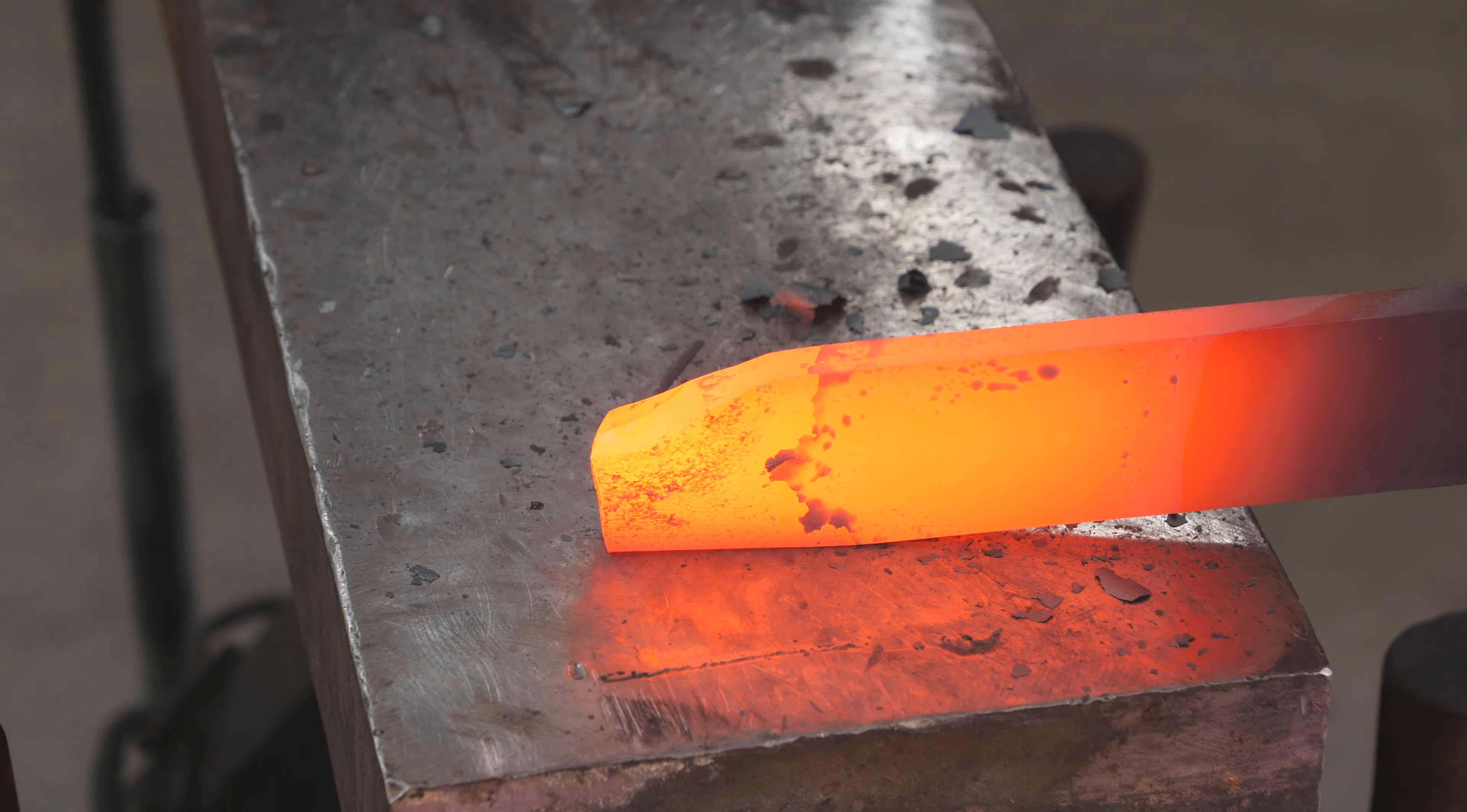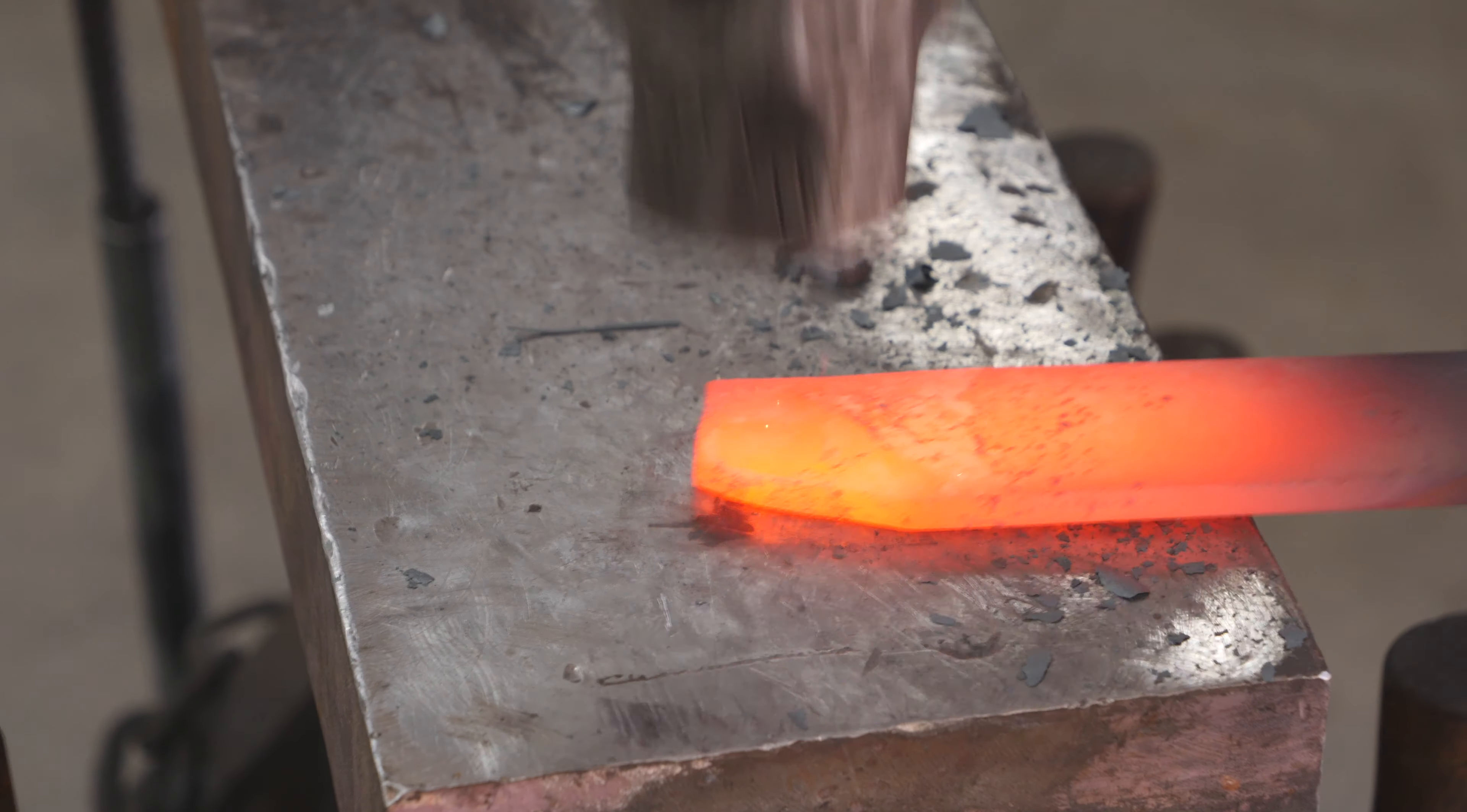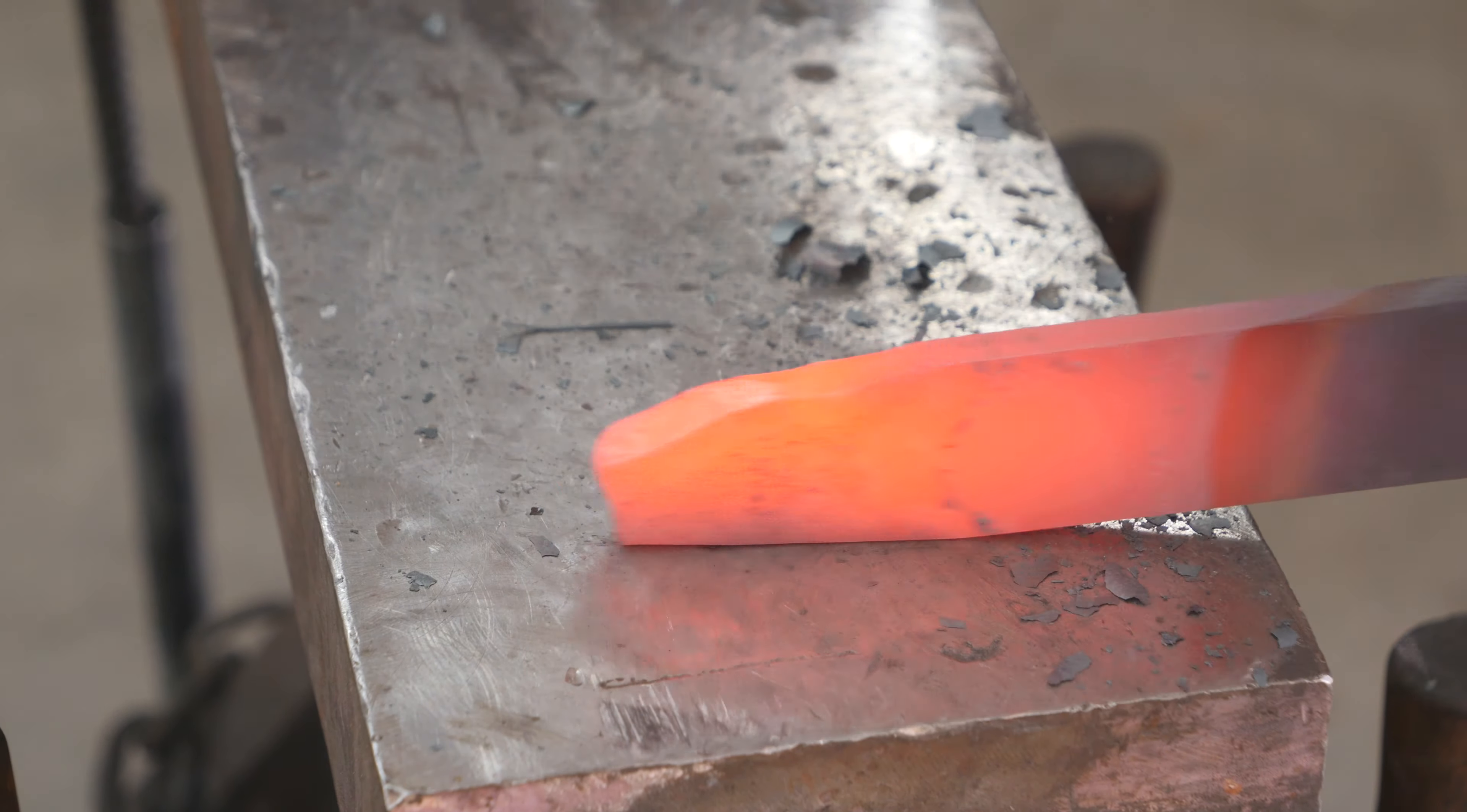Almost all the knives I've done over the last two years or so were really fancy mosaic Damascus patterns, and with those you can't really forge out the blade shape as much as you can with a plain carbon blade because it'll distort the pattern too much. So it was really nice just getting back to my roots and forging out a plain carbon blade, just a hammer, hot metal, and the anvil.